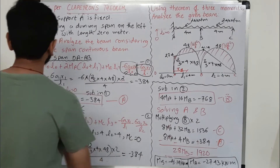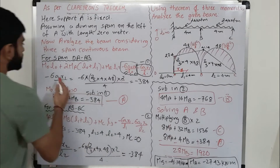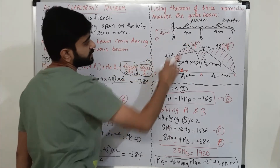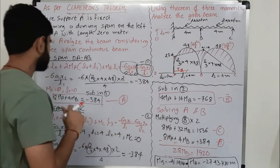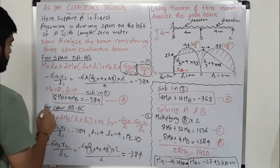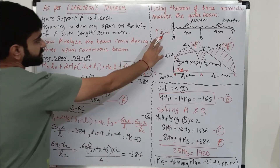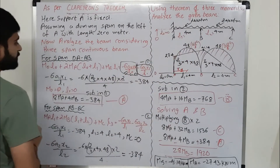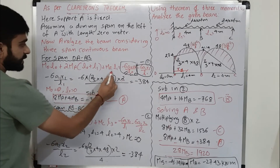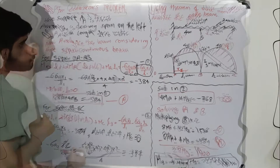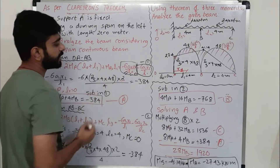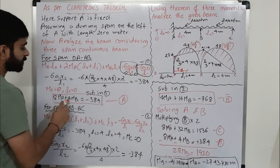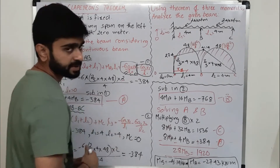Moving to the left-hand side of the equation: M₀·L₀ is zero. Since support A is a fixed support, Mₐ is not zero — there is a resisting moment at A, so we keep Mₐ as unknown. L₀ plus L₁ equals 0 + 4 = 4. The resulting equation is: 8Mₐ + 4M_B = -384. This is Equation A.